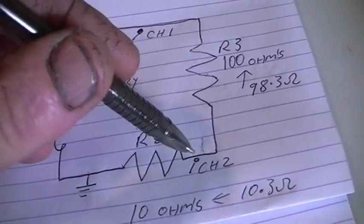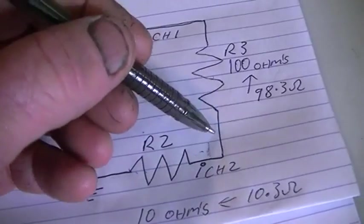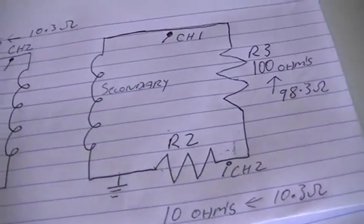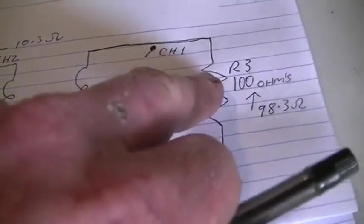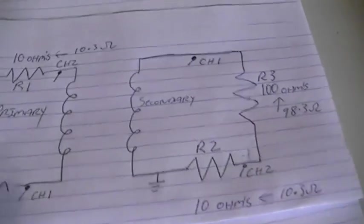So we have a known voltage across this resistor and a known resistor value. And the same on R3, a known voltage and a known resistor value. So we can calculate dissipated power across both of those resistors.